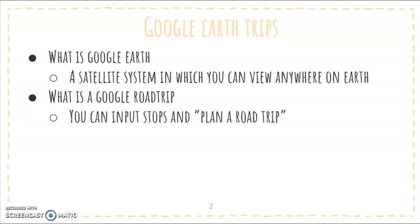What is Google Earth? Google Earth is a satellite system in which you can view anywhere. You can type in an address, coordinates, or anything you could search up. You can even just scroll around, zooming in and finding places.